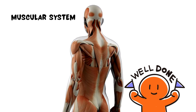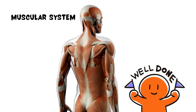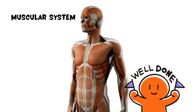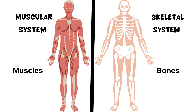Congratulations, well done! We have built the muscular system using muscle cells. Here we have two systems: on the left the muscular system, which is built with muscle cells, and on the right the skeletal system. Look at the picture — it is made of bones. The bones in our body consist of the skeletal system.